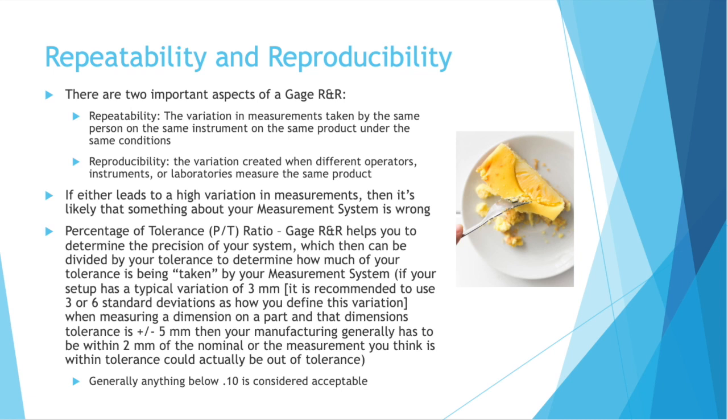Reproducibility is the variation created when different operators, instruments, or labs measure the same products. So how easily can these results be reproduced? If either repeatability or reproducibility leads to a high variation in measurements, then it's likely that something about your measurement system is wrong.